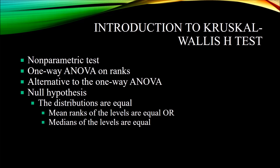The Kruskal-Wallis H-Test is a non-parametric test, sometimes referred to as the one-way ANOVA on ranks. It is a non-parametric alternative to the one-way ANOVA. With a one-way ANOVA, you have one independent variable with two or more levels and one dependent variable measured at the continuous level of measurement. If those data fail to meet the assumptions for one-way ANOVA, the Kruskal-Wallis H-Test is a possibility.